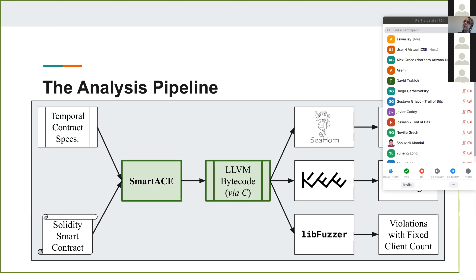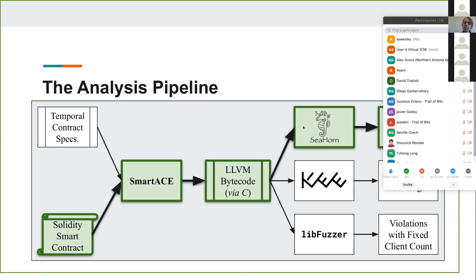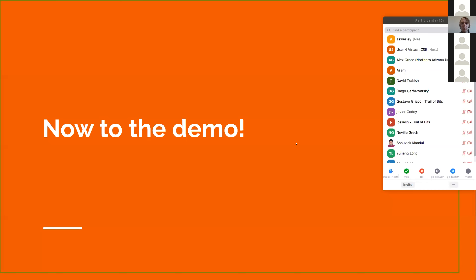At the center of the SmartAce pipeline is the SmartAce tool itself, which takes in a smart contract and produces a model encoded using LLVM bytecode. The choice of LLVM as a modeling language was motivated by two benefits. First, it allowed us to leverage prior work from my colleagues on functional verification of LLVM programs. Second, since LLVM is a bytecode language that can be compiled and executed, it makes our models executable and even debuggable — so if we find a violation, we can dig into the model to figure out the cause. The pipeline I'll focus on most is the software model checking pipeline, backed by Seahorn.